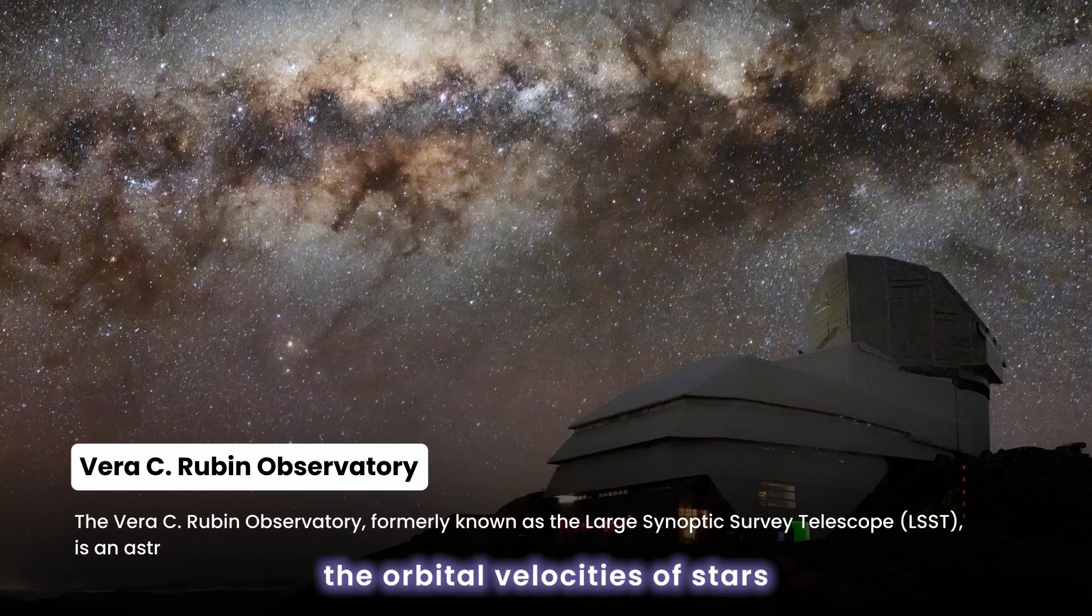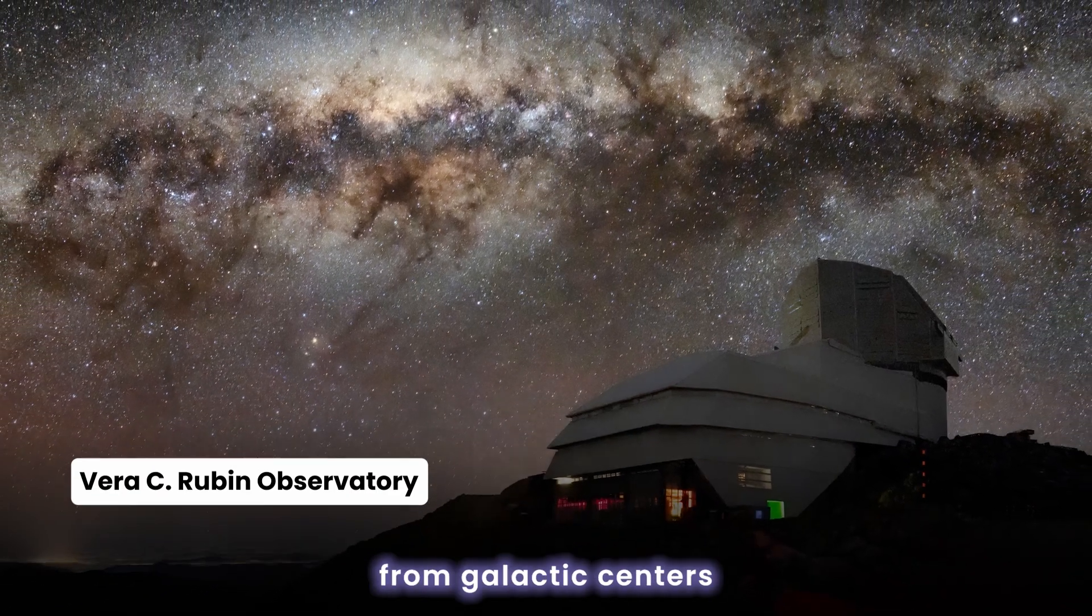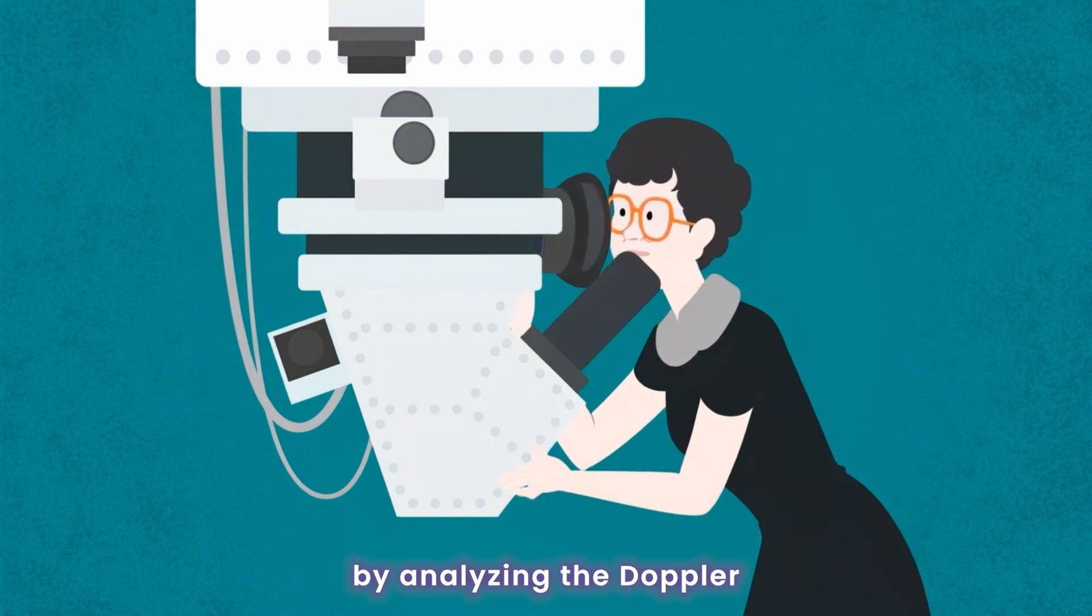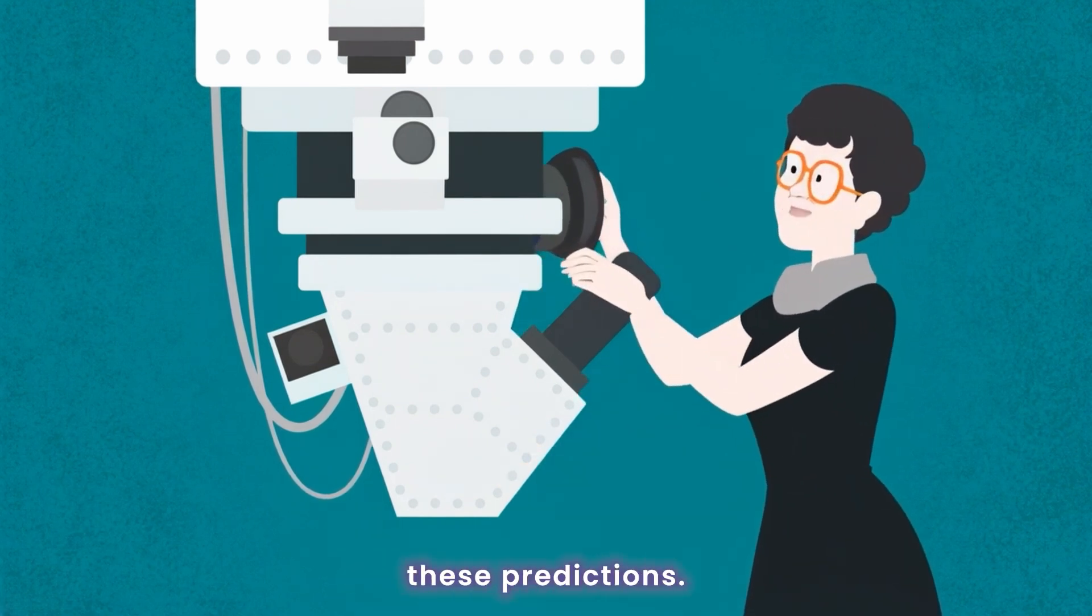Rubin measured the orbital velocities of stars at various distances from galactic centers by analyzing the Doppler shift of their spectral lines. What she found completely contradicted these predictions.